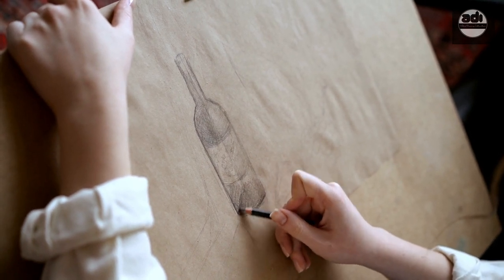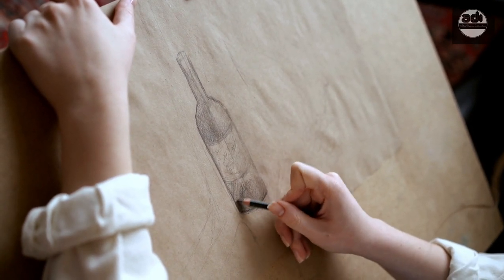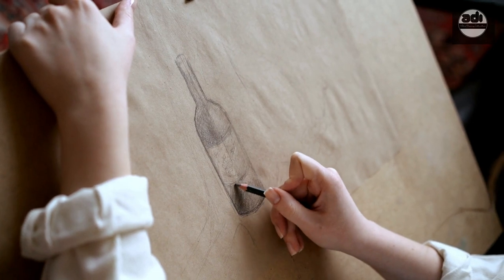When drawing on black paper, it is the opposite of drawing on white paper. Here you draw the lights and mid-tones and the paper becomes the darks.